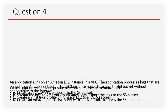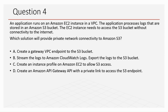Question four: an application runs on an Amazon EC2 instance in a VPC and processes logs stored in an Amazon S3 bucket. The EC2 instance needs to access the S3 bucket without connectivity to the internet. Options: A — create a Gateway VPC Endpoint to the S3 bucket; B — stream logs to CloudWatch Logs and export to S3; C — create an instance profile on EC2 to allow S3 access; D — create an Amazon API Gateway API with PrivateLink to access S3. The correct answer is Option A — create a Gateway VPC Endpoint to the S3 bucket.